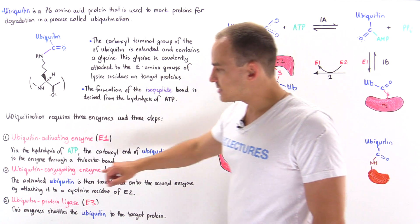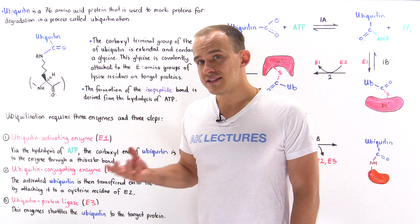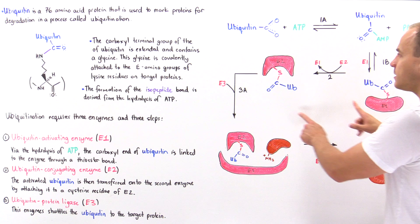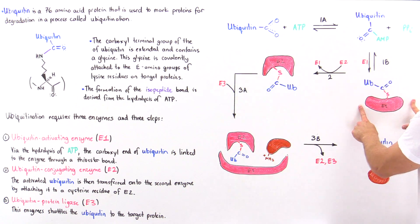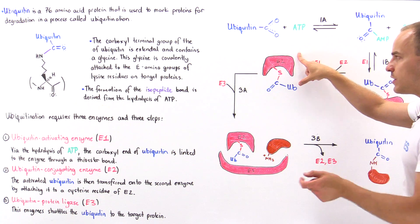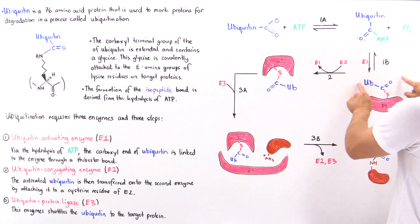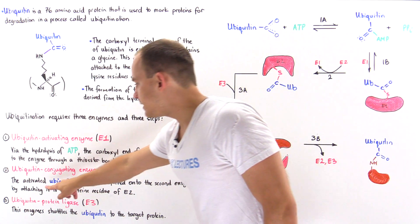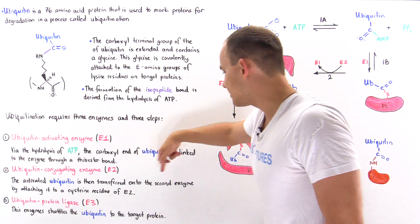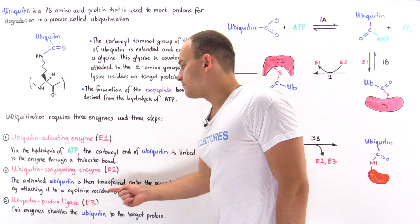Step two is catalyzed by an enzyme called ubiquitin conjugating enzyme, or E2. What this enzyme does is transfer the ubiquitin from enzyme E1 onto enzyme E2. Just like E1 contains a sulfhydryl group at its active site, E2 also contains a cysteine residue with a sulfhydryl group. So we simply have a shuttling — a transfer — of the activated ubiquitin from enzyme E1 to enzyme E2, attaching it onto the cysteine residue of E2.